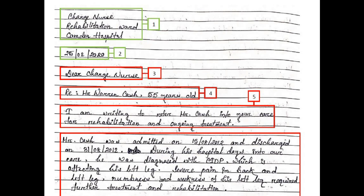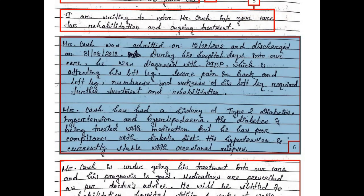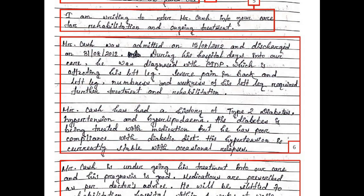Moving to the second and third paragraphs: Mr. Cash was admitted on 15-8-2012 and discharged on 31-8-2012. During his hospital days he was diagnosed with CIDP, affecting his left leg. Severe pain in the back and left leg, numbness and weakness of his left leg required further treatment and rehabilitation. Mr. Cash has a history of type 2 diabetes, hypertension and hyperlipidemia. His diabetes is being treated with medication but he has poor compliance with diabetic diet. His hypertension is currently stable with occasional relapses. However, these two paragraphs are totally scattered and poorly organized, with information spread all over the place without any proper connection.